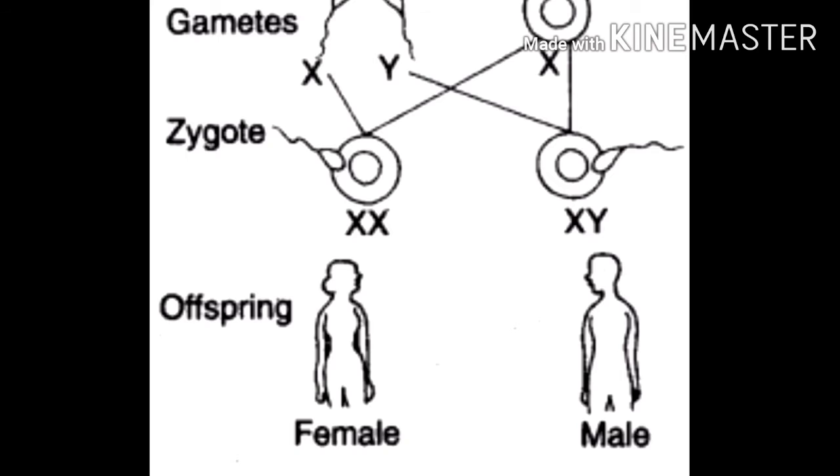While females have 44 autosomes plus XX chromosomes, males have 44 autosomes plus XY chromosomes.